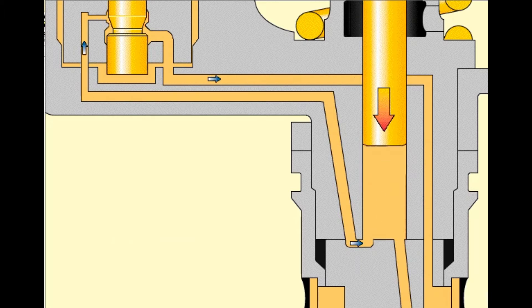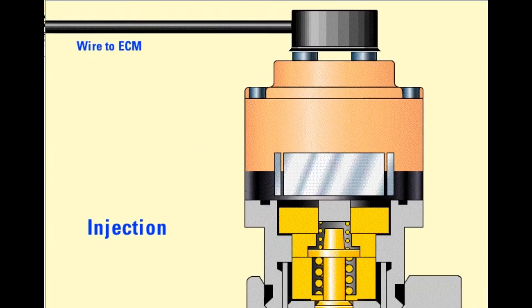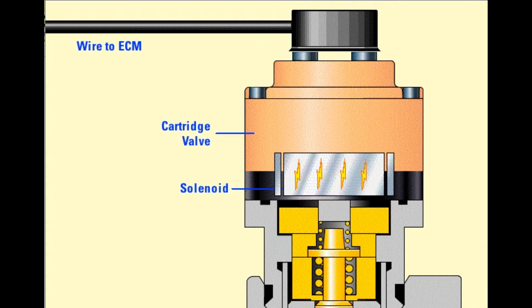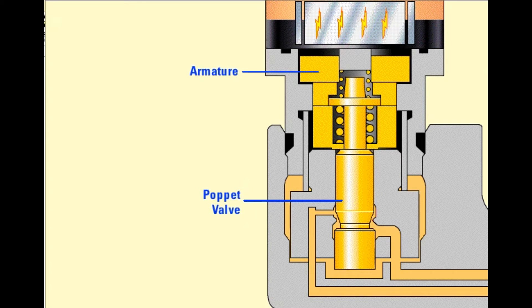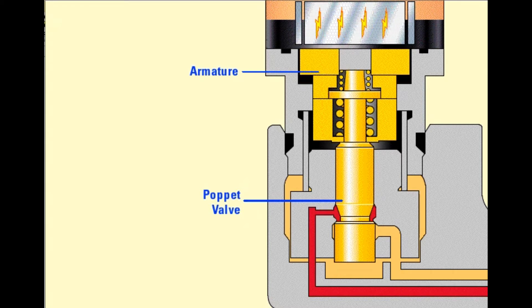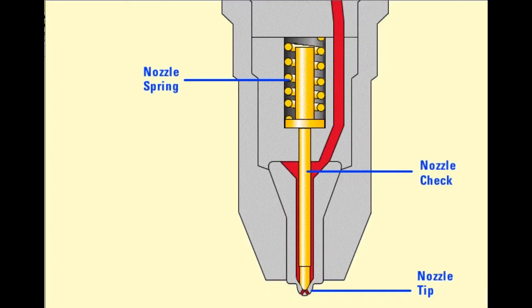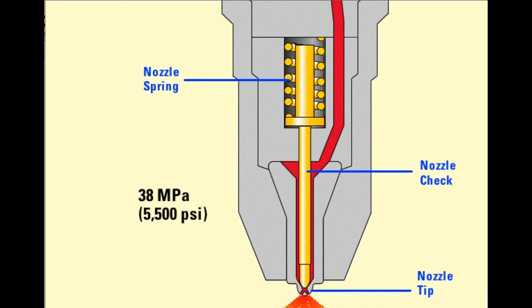To start injection, the ECM sends a current to the solenoid on the cartridge valve. The solenoid creates a magnetic field which attracts the armature. When the solenoid is energized, the armature lifts the poppet until it contacts the poppet seat. Once the poppet closes, the flow path for the fuel leaving the plunger cavity is blocked. As fuel continues out of the plunger cavity, pressure builds very rapidly. The poppet transfers this pressure through the plunger cavity through the nozzle assembly. When fuel pressure reaches approximately 38 megapascals or 5,500 psi, the nozzle check lifts off its seat and the fuel flows out the tip. This is the start of injection.